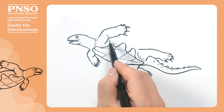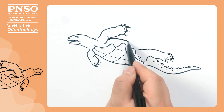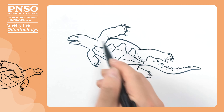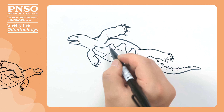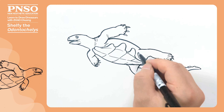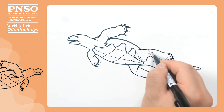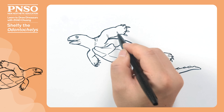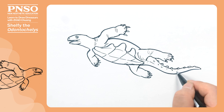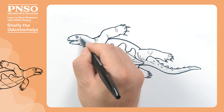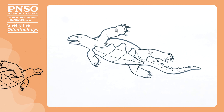Next, we draw its back. Its back was smooth and not covered by carapace. Some texture can be added to the knees and wrists. Finally, let's draw its eardrum. In this way, we've finished drawing this Odontocheles. Thank you.